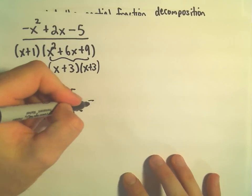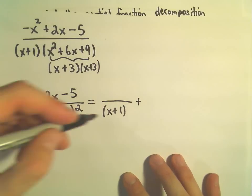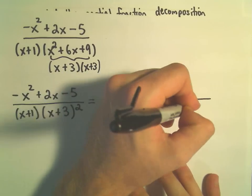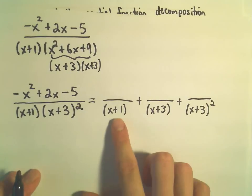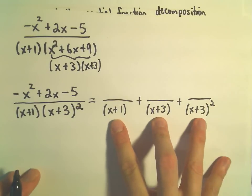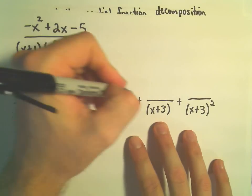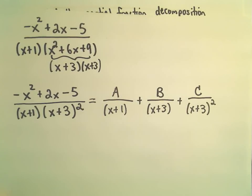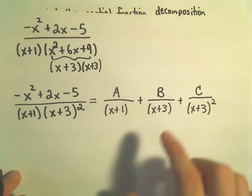The rule is: the x plus 1 is going to get its own fraction. We're going to use an x plus 3 to the first power, but then we also have to use an x plus 3 to the second power. Each of these are linear terms, so in the numerator we use something of one degree less, which would just be a constant. So I'm going to use the constants a, b, and c, and now I have to figure out those constants.